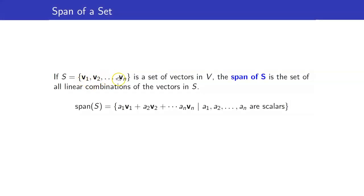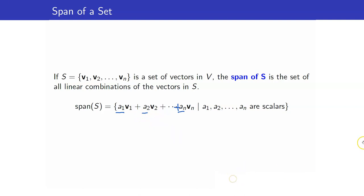In this section, I am going to discuss the span of a set of vectors. Suppose that we have vectors v1, v2, up to vn. The span of this set of vectors is simply the set of all linear combinations of the vectors in S. In other words, the span of S is the set of all possible combinations: you multiply the vectors v1, v2, up to vn with scalars a1, a2, up to an, and add all of them. This set is called the span of a set S.